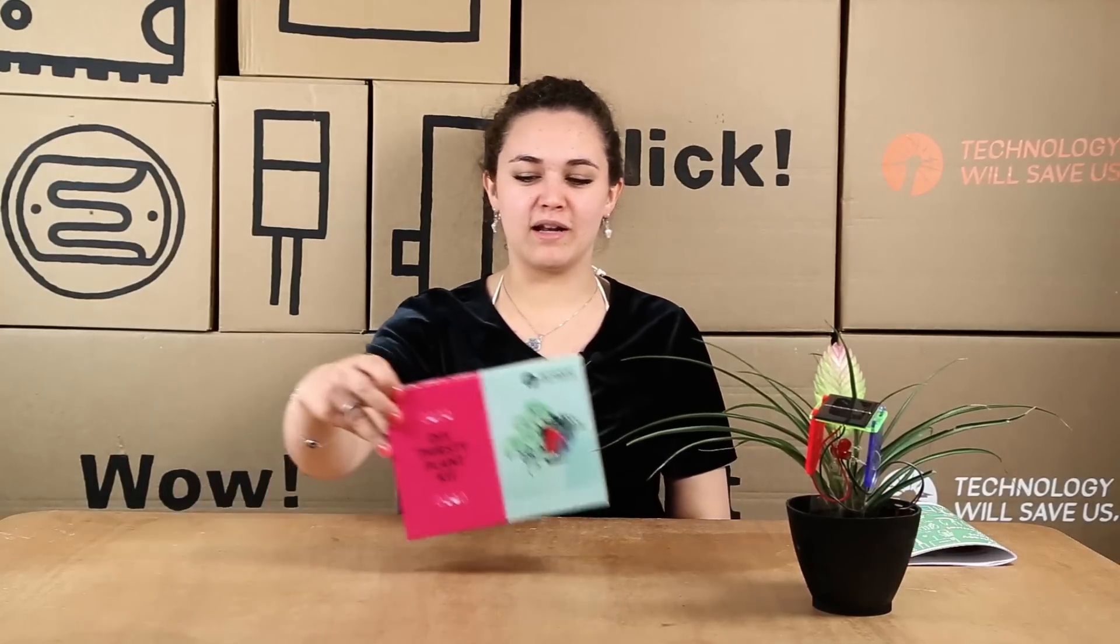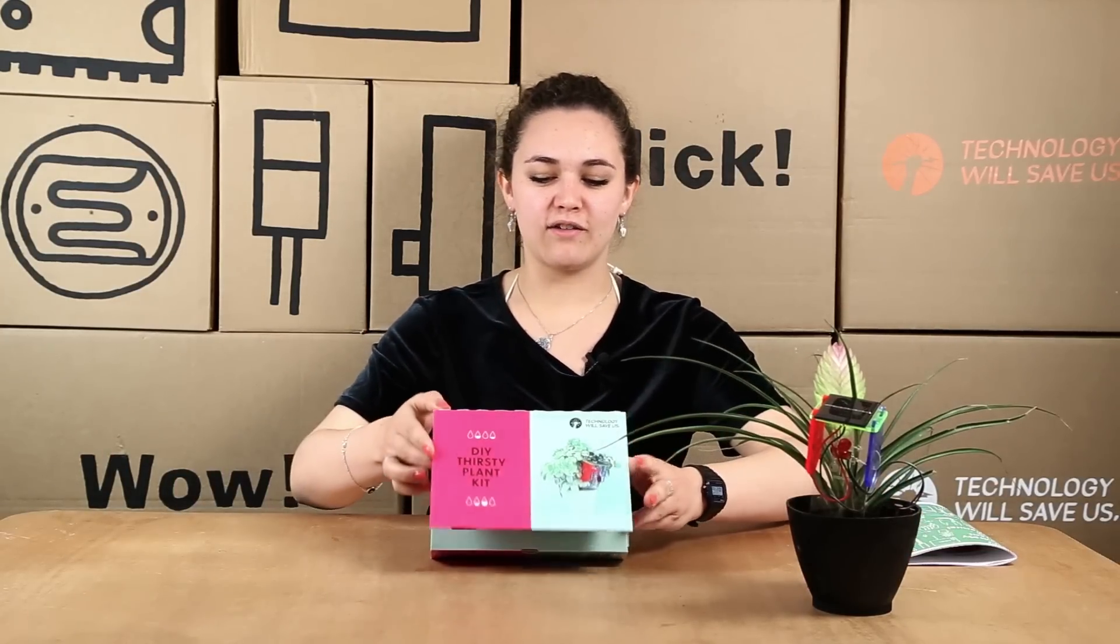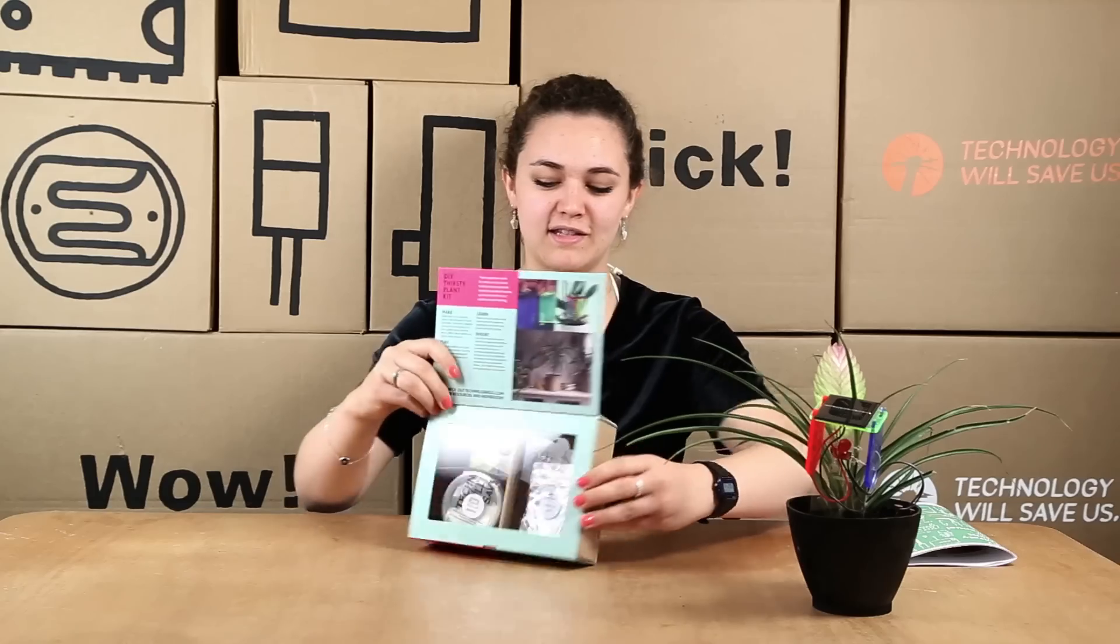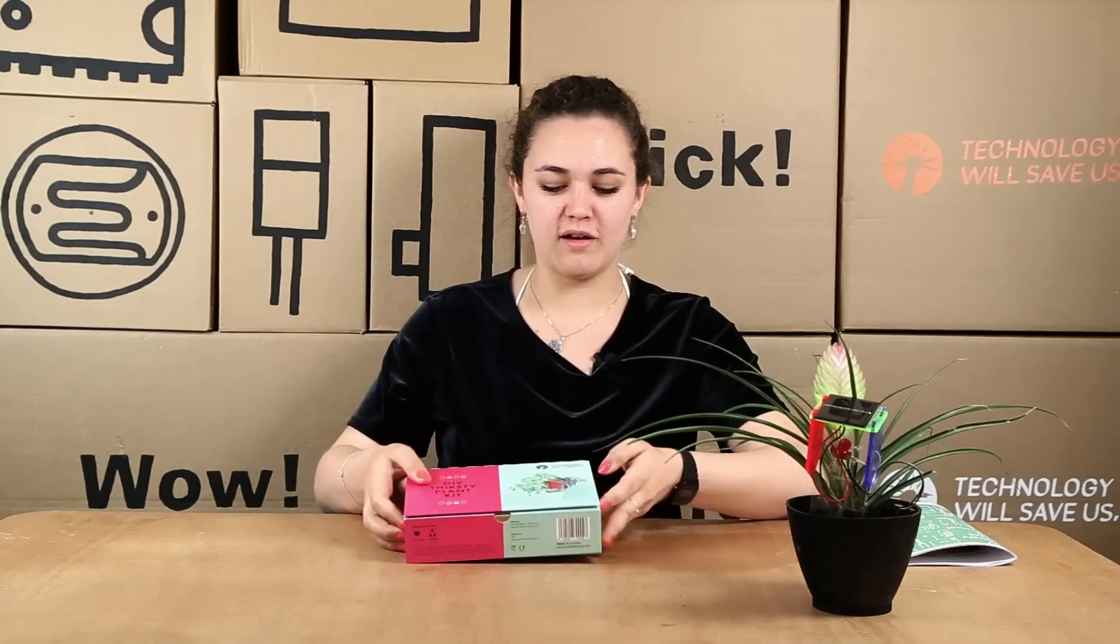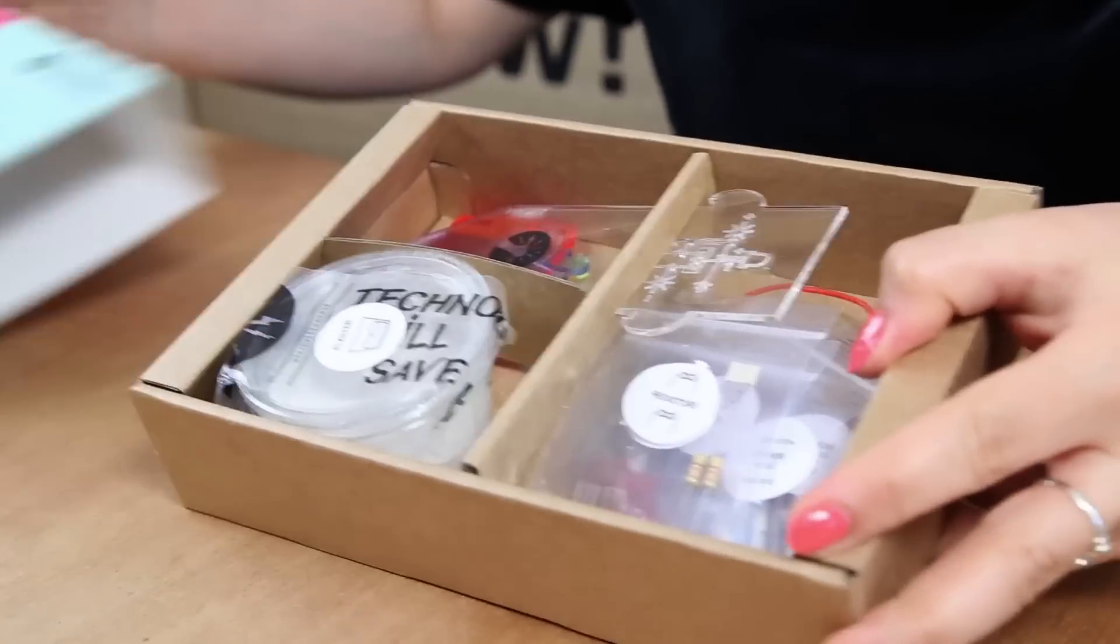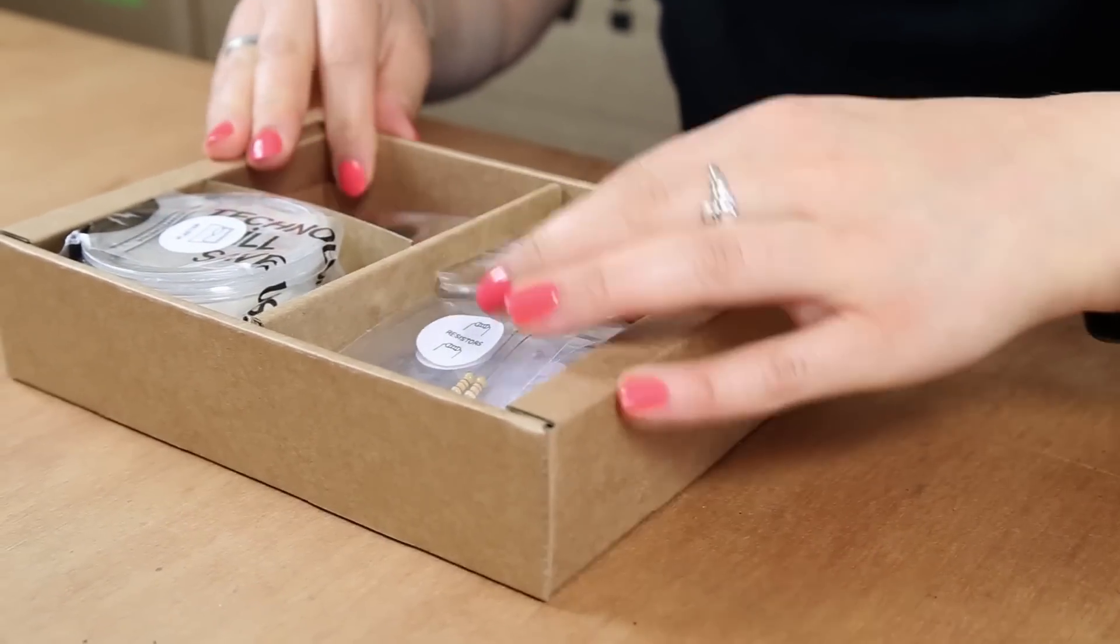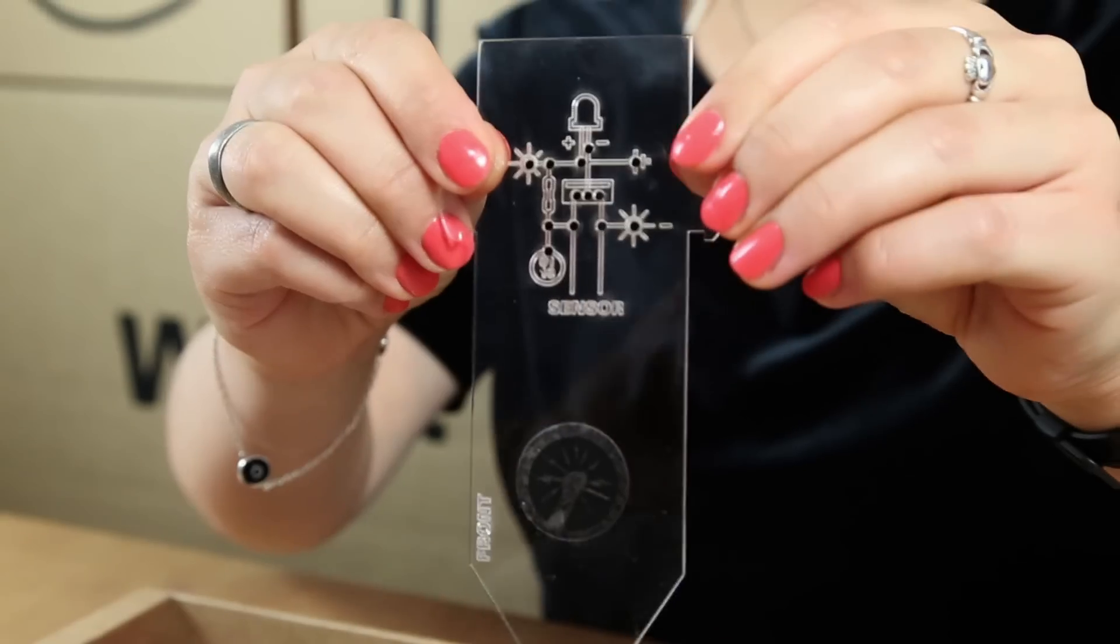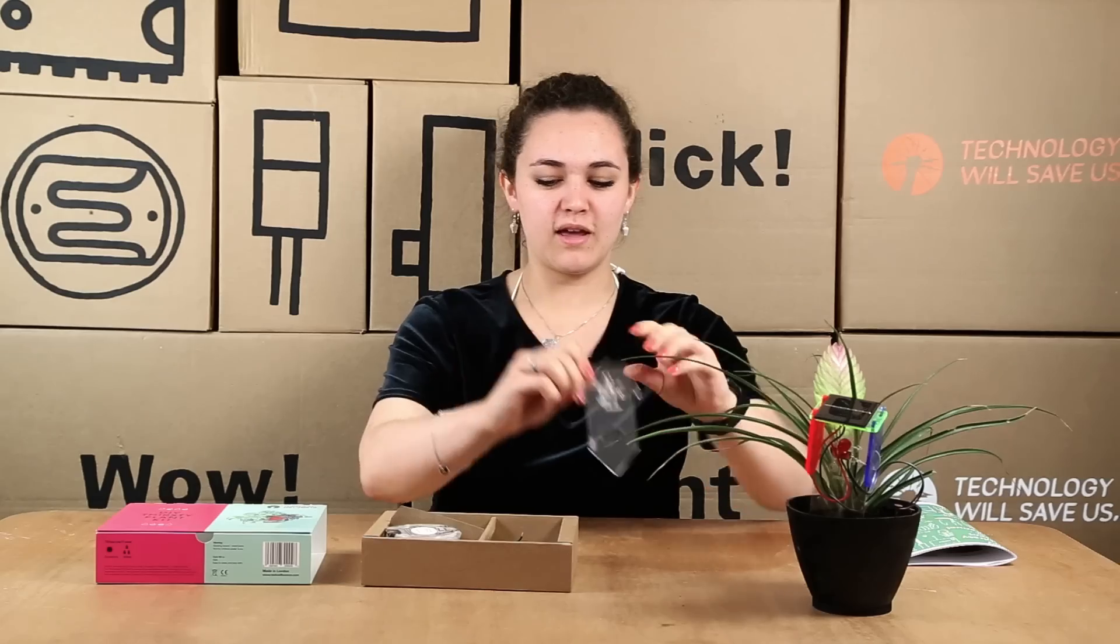So when you get your DIY Thirsty Plant kit, you get it like this. You have nice pieces of information inside and on the back. And if we open it up, you have your acrylic marker. So this is where you put all your circuitry into. It has a nice little diagram there.